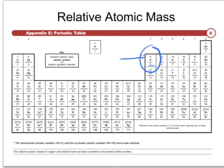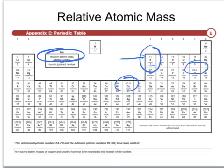We often confuse this top number with the mass number — which is the number of protons and neutrons — and use it to work out that boron has 6 neutrons. However, we must remember that this number isn't the mass number; it's actually the relative atomic mass. The relative atomic mass is the average mass of an atom of an element. A couple of elements have odd relative atomic masses which aren't whole numbers, because they're merely an average of the mass of each of the atoms of the element.